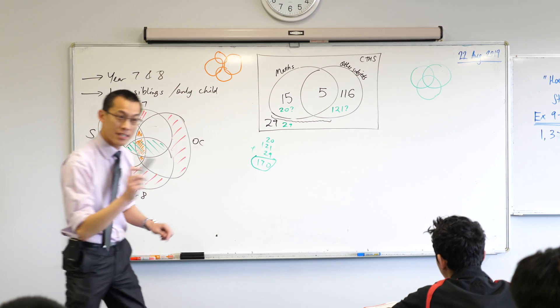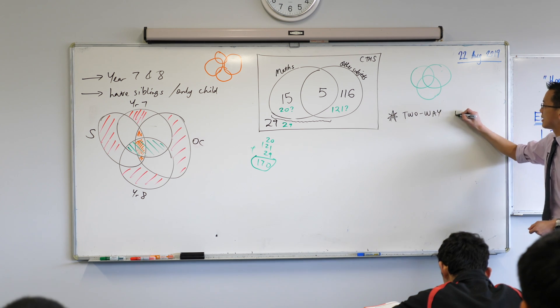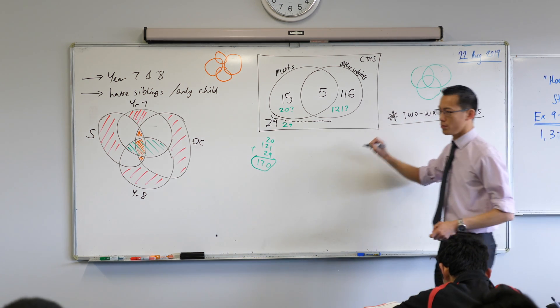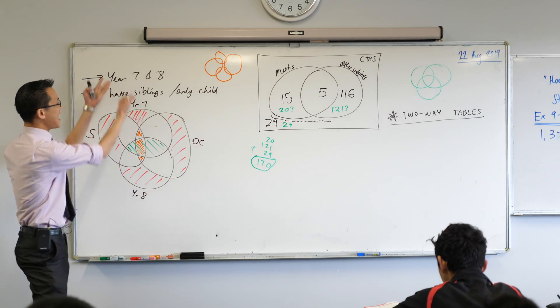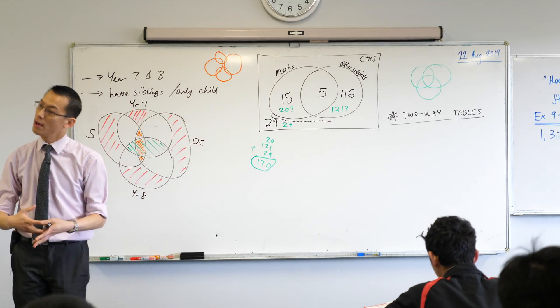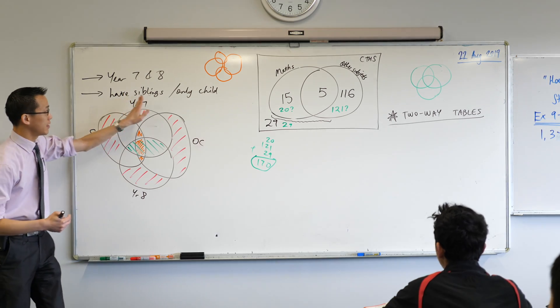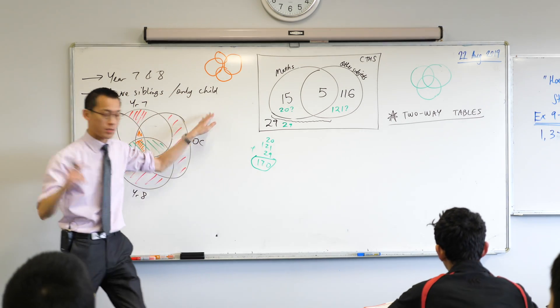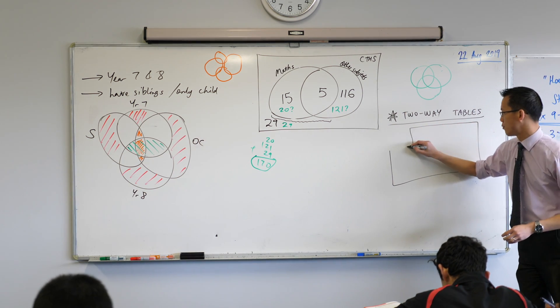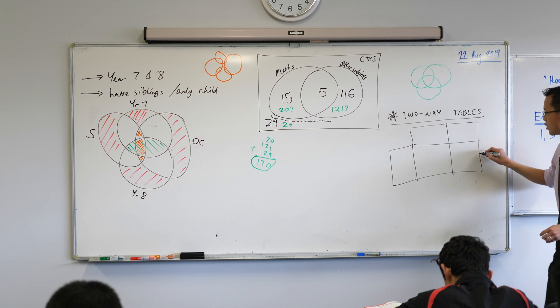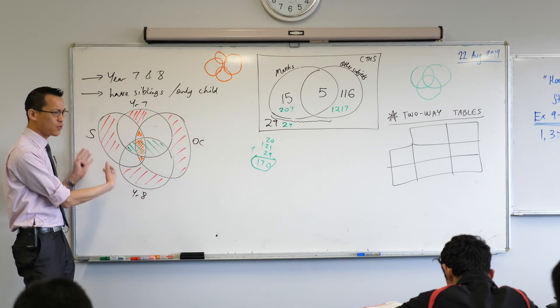So here's how we're going to represent it instead. Remember, I asked you to leave a spot for that subheading. The subheading I'd like you to make is two-way tables. Now, what we want to do is take this same set of information and represent it in the simplest way possible. Year 7 and 8, we're going to make these the rows of our table and siblings slash only children, we're going to make them the columns.